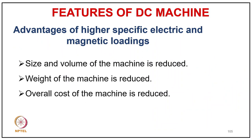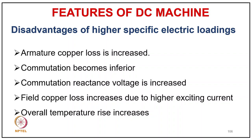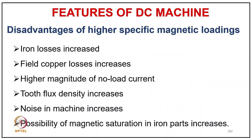Advantages of higher specific magnetic and electric loading: reduced machine size, volume, weight, and overall cost. Disadvantages of higher specific electric loading: increased armature copper losses, inferior commutation, increased commutation reactance voltage, higher field copper loss, and increased temperature rise. Disadvantages of higher specific magnetic loading: increased iron losses, higher field copper losses, higher no-load current, increased tooth flux density, increased noise, and possibility of magnetic saturation.